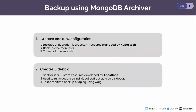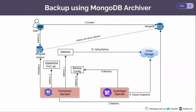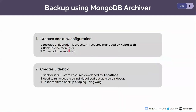There are actually only two steps. The first step is the operator creates the backup configuration. The backup configuration is a custom resource managed by KubeStash, which is a product of AppsCode — their backup and restore solution. Using this backup configuration, the database manifests such as authentication secret, configuration secret, certificates, etc. are backed up. All the configuration is specified in the MongoDB Archiver. The backup configuration is also responsible for taking the volume snapshot of the database.